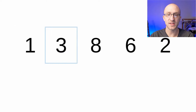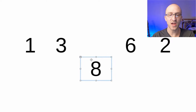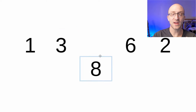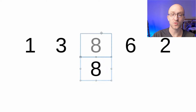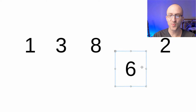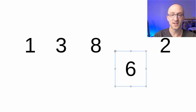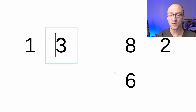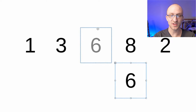Then we move on to the next element in the array, eight. We copy it out to a temporary variable, then start walking backwards towards the beginning of the array, and we compare the number that we find to the number eight. If it's greater, we shift it right. In this case, three is not greater than eight, so we end up making no shifts and inserting eight into its correct spot. Next, we have the number six. We copy six out to a temporary variable and then start walking backward, comparing each number we run into to six. Eight is greater than six, so we shift it to the right. Next, three is not greater than six, so we stop there and insert six into its correct spot in the array.